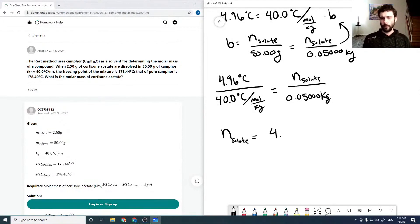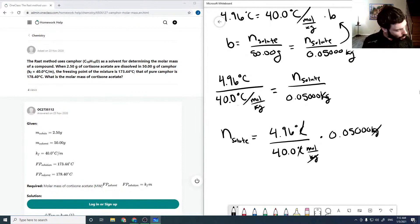We can solve for our solute, which is just 4.96 degrees Celsius over 40.0. So our degree Celsius is going to cancel and multiply by our mass of our solvent. And of course this kilogram here is going to cancel with that. And then moles will actually pop out on top here. And so this comes out to be 0.00620 moles.